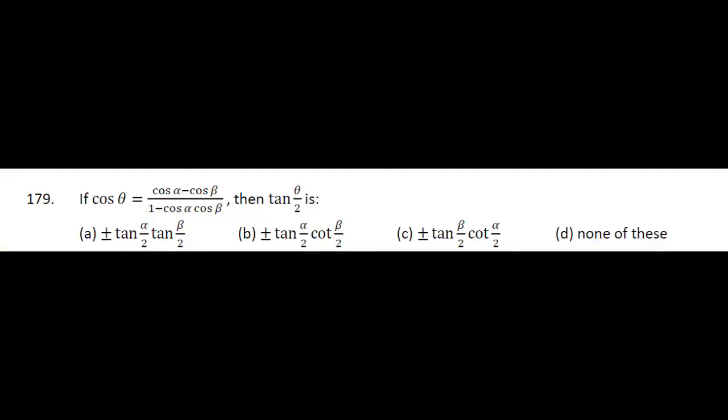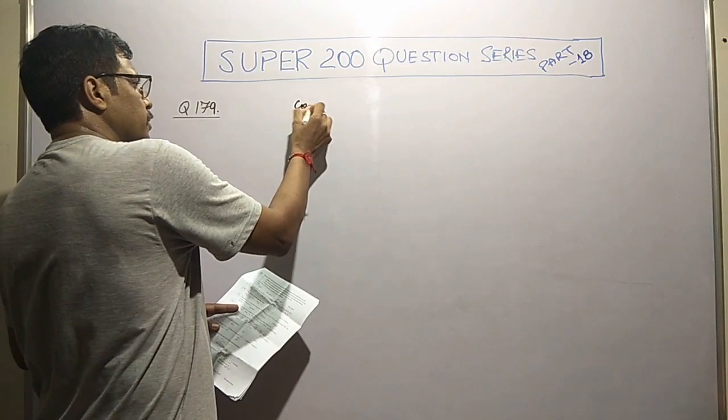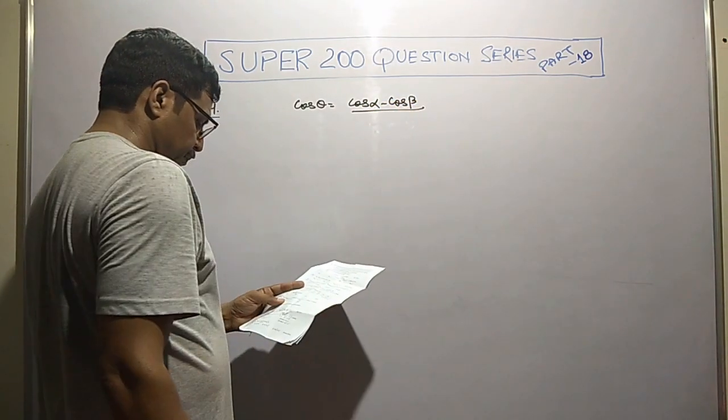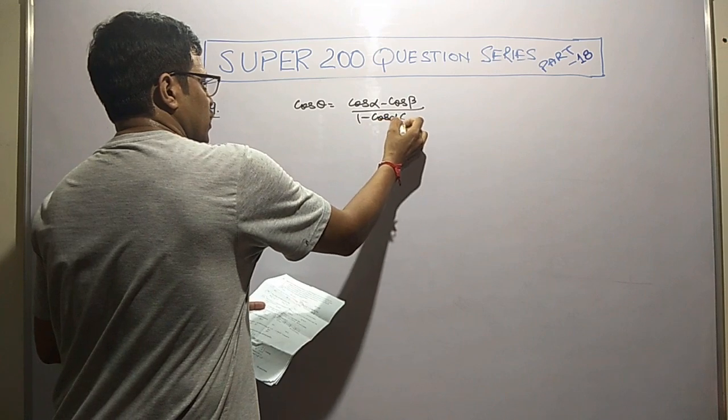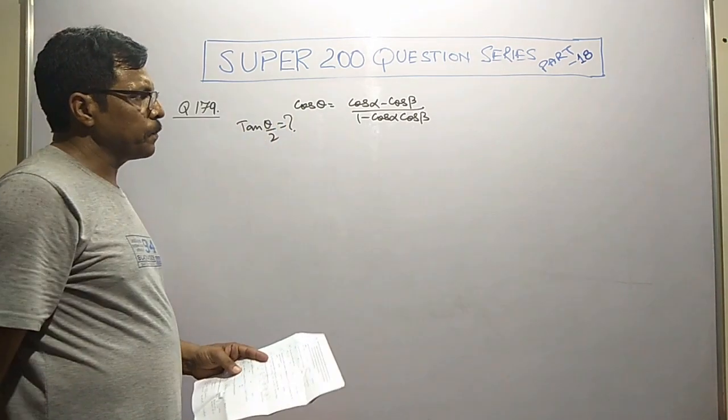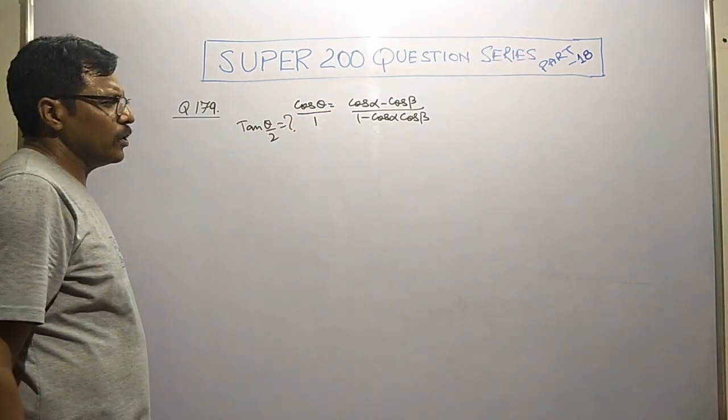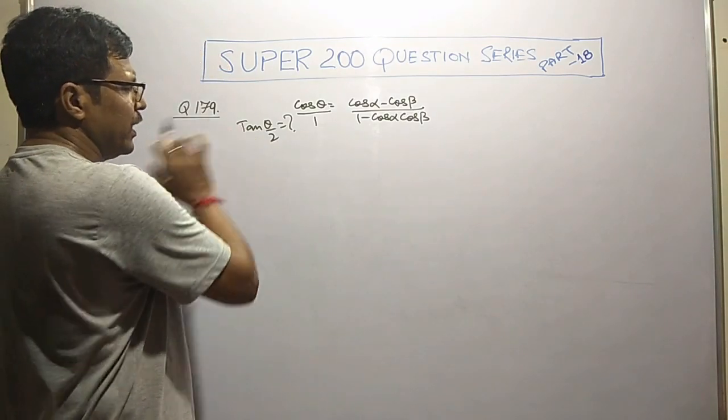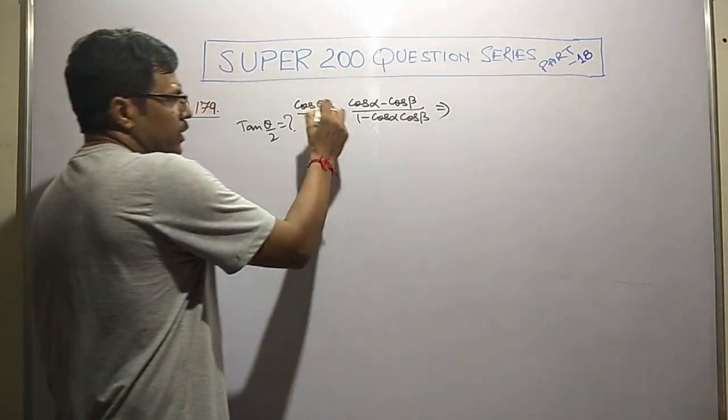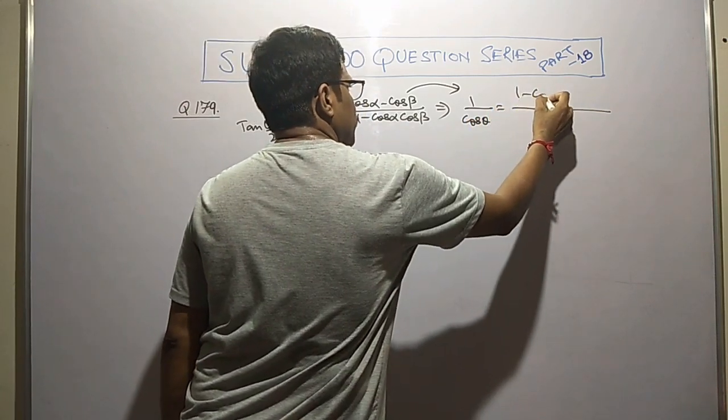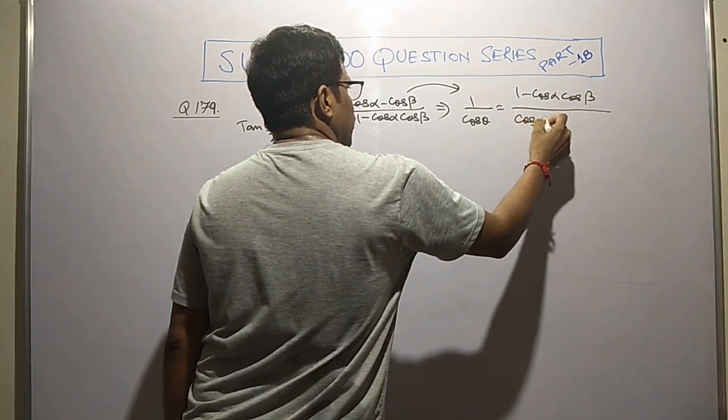Question number 179. We are given the relation: cos theta equals cos alpha minus cos beta over 1 minus cos alpha cos beta. We are demanded the value of tangent theta by 2. The relation between 1 and cos theta involves addition and subtraction. Getting this reciprocated, I get 1 by cos theta equals 1 minus cos alpha cos beta over cos alpha minus cos beta.